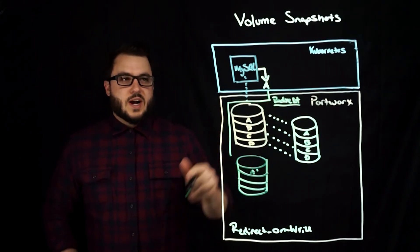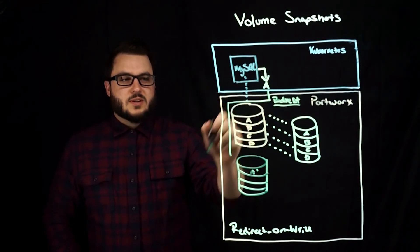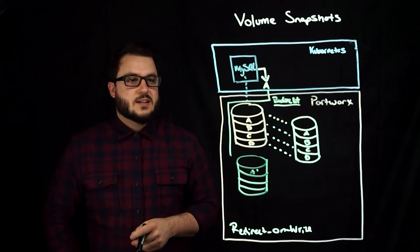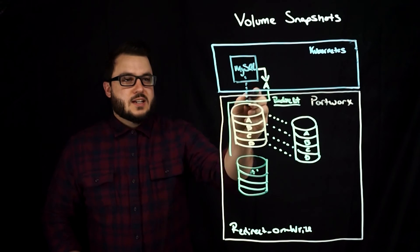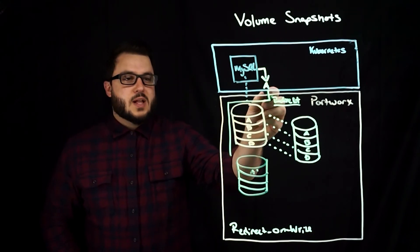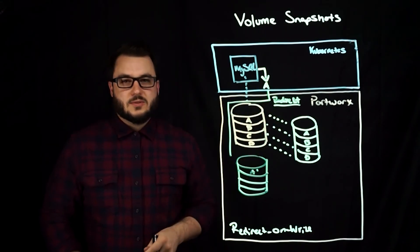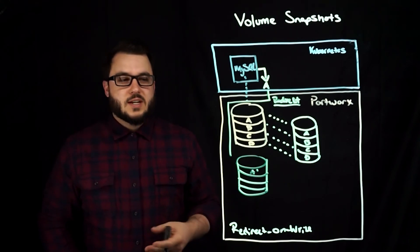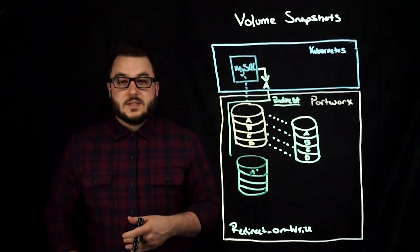So when you try to write to the volume that already has a snapshot of it, it's going to say I can't overwrite that block, so let's go ahead and just redirect to another space that's available in the storage subsystem.